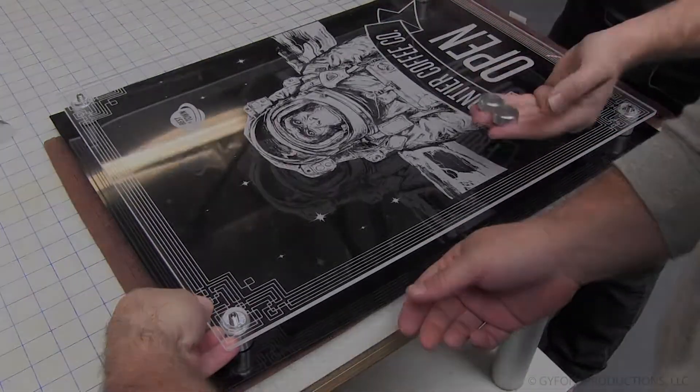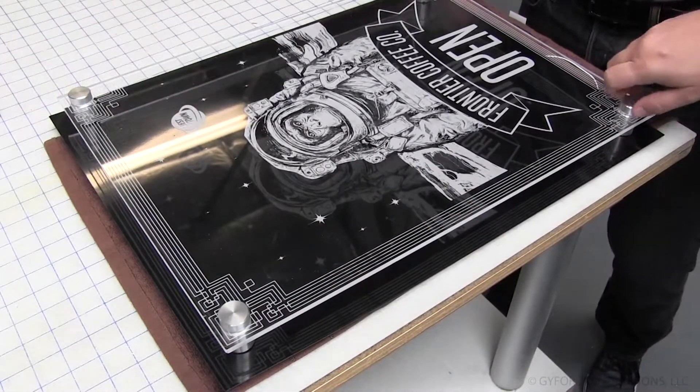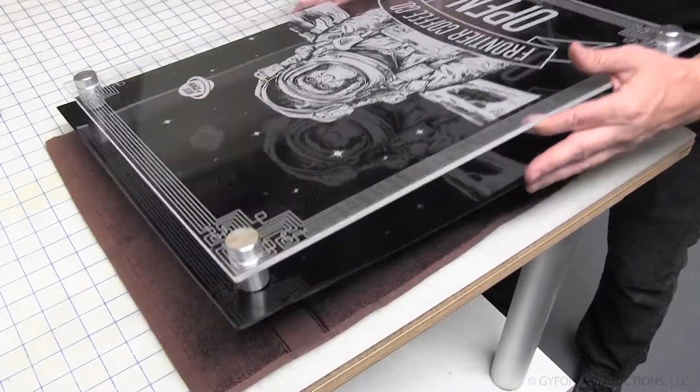However, a backer panel between the sign and the wall makes installation and maintenance easier. This can also provide better lighting contrast when a dark material is used.